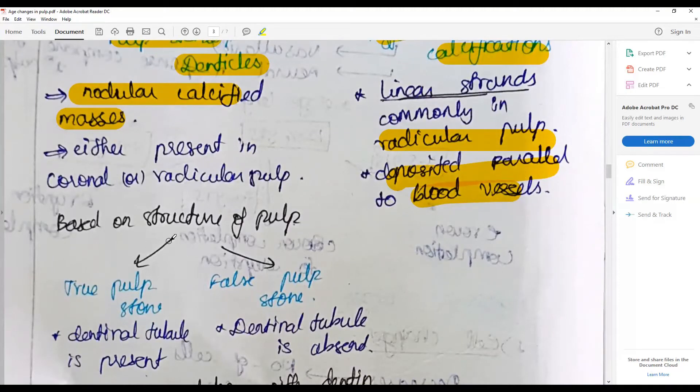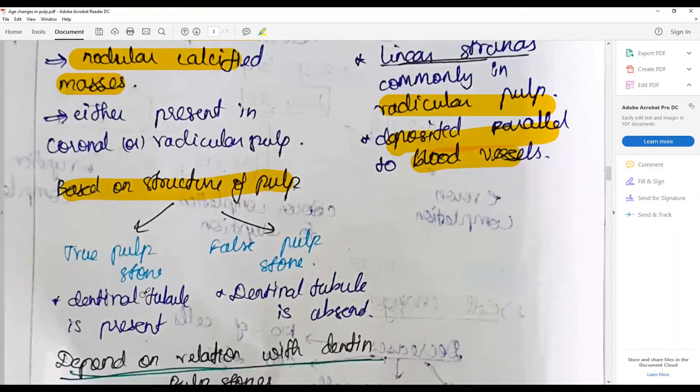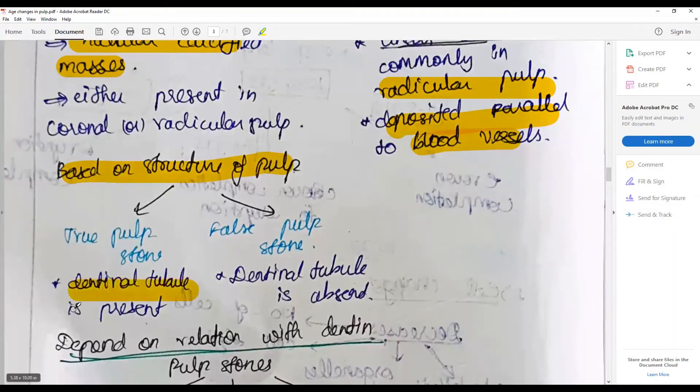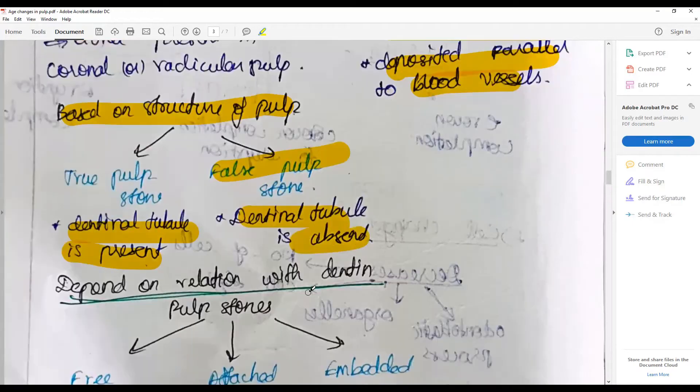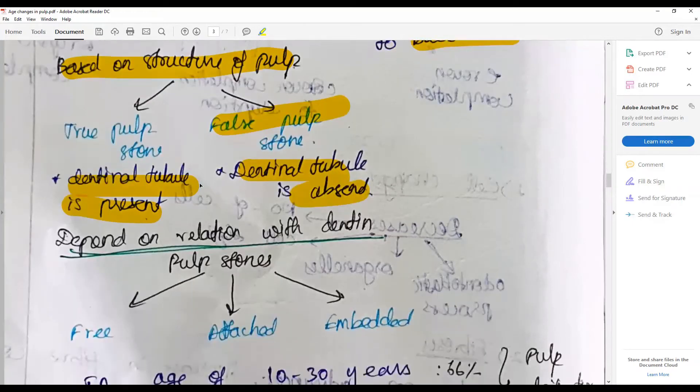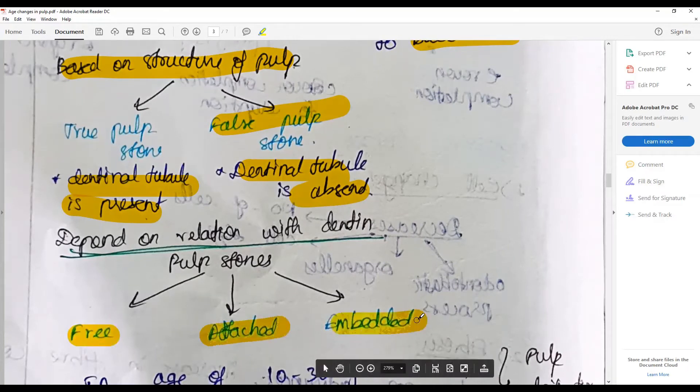These denticles or pulp stones are further classified into two types: true pulp stones or false pulp stones. The true pulp stones will have dentinal tubule-like structures, whereas false pulp stones is absent; it is just a mere mass of calcified tissue.